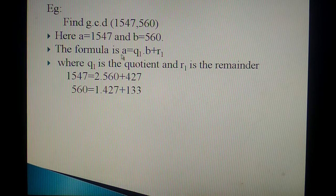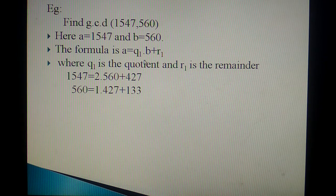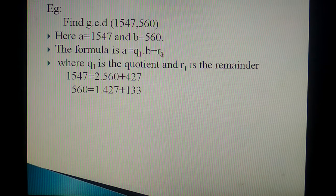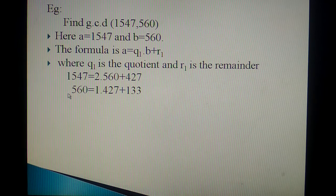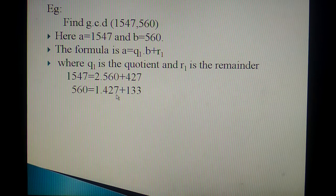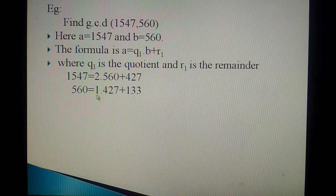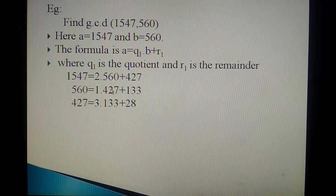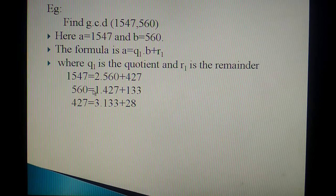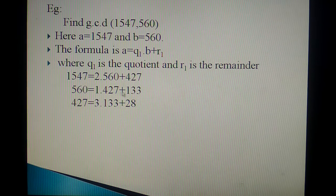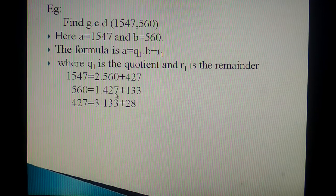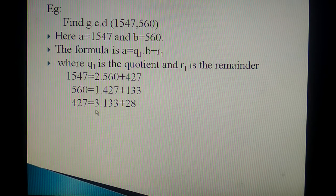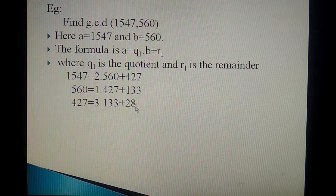Now in the place of A, you are replacing B that is 560 is equal to, in the place of B, you are replacing R1 that is 427. When you are dividing 560 by 427, you will be getting the quotient as 1 and remainder 133. Again you replace the value of 560 by 427 and the 427 by 133. Now dividing 427 by 133, you will be getting the quotient as 3 and remainder 28.